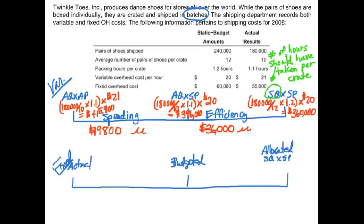Now here's our fixed overhead diagram. We'll fill in the first two pegs quickly. The problem tells us that actual fixed costs are $55,000 and our budgeted fixed costs are $60,000. The only peg we really have to compute is the third peg. Also note that overhead has a cost driver, and that driver follows through for both variable and fixed — so the standard quantity used for variable will be the same standard quantity for fixed.